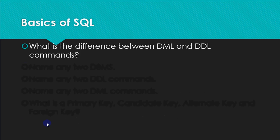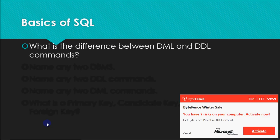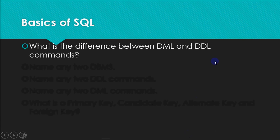A very basic question about SQL is the difference between DML and DDL commands. DDL is Data Definition Language, which has commands related to the structure of the table — like when you have to create a table, modify its structure, or delete the table. DML is Data Manipulation Language, having commands to work on the data stored in the table, like inserting new data, deleting existing data, or modifying the data.